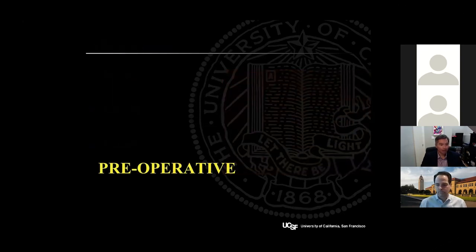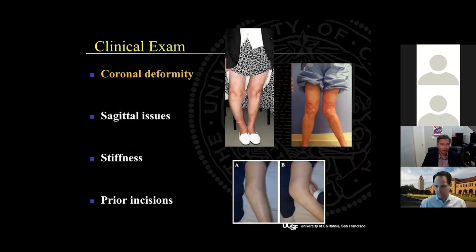Starting with the preoperative evaluation of the patient with knee arthritis. One of the first things to assess during the clinical exam is the coronal deformity of the patient and to determine if it is correctable to neutral. If it's not, then you should be prepared to do more soft tissue releases to balance the knee. Additionally, you should examine the collateral ligament competency at zero and 30 degrees, and if there's significant laxity, anticipate the need for a higher level of constraint at the time of surgery.